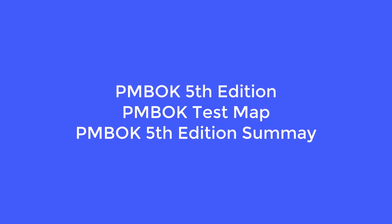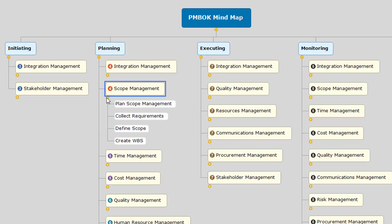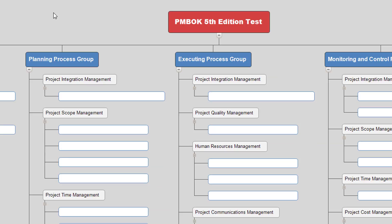There are also three other Mind Maps that you can download that provide the same information but in a different twist. The first one is the PMBOK Mind Map. This is organized similar to the Planning Map. You can see under Planning there's integration management, scope management, and time management. If I click on scope management, you can see the four processes. This map also includes the processes for all of the process groups: initiating, planning, executing, monitoring and control, and closing.